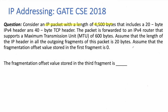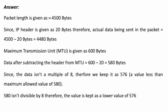There is an IP packet. The total length is 4500 bytes, the IP header length is 20 bytes, and the TCP header length is 40 bytes. The packet is forwarded to an IPv4 router that supports a maximum transmission unit of 600 bytes. MTU is the maximum amount of data we can send in a single packet. Assume the IP header in all outgoing frames is 20 bytes, and the fragmentation offset in the first fragment is 0. We need to find the fragmentation offset value stored in the third fragment.